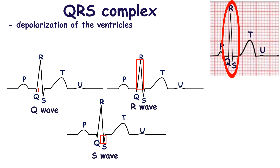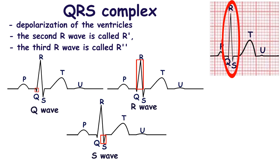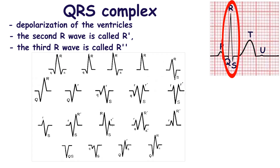If there are more than one R wave, the second one is called R' wave, the third one is called R'' wave, and so on. Any negative deflection after the R wave is called the S wave. It's important that waves are referred only to deflections crossing the baseline. Large waves are marked by capital letters, and small ones are marked by lowercase letters.